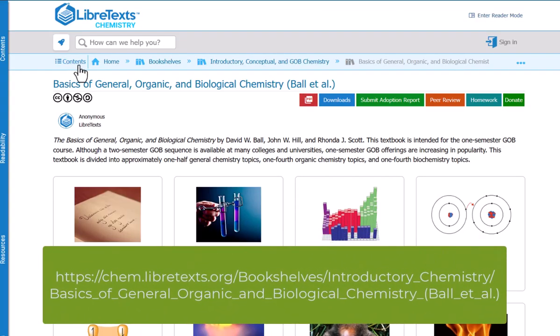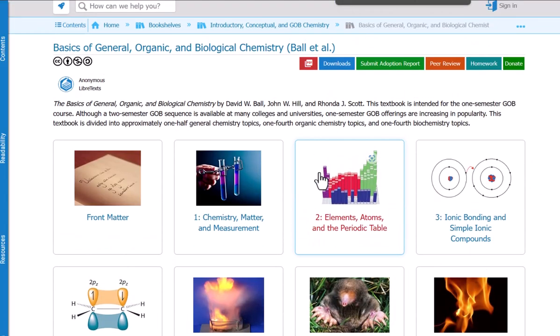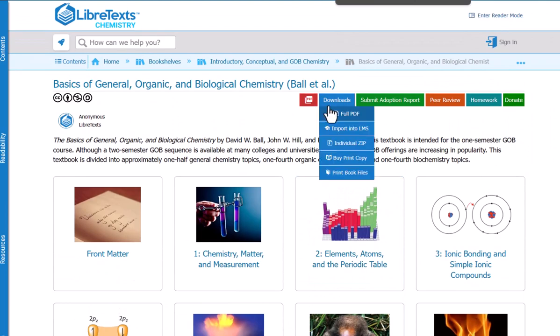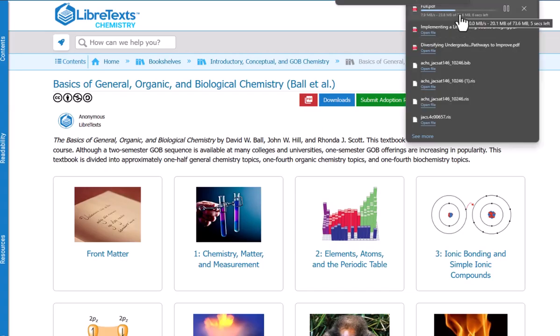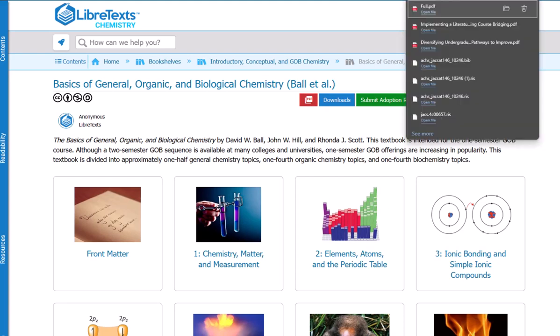This OER textbook also contains the information that you need, and I'm going to search for scientific notation in this case, but it doesn't have that information in the table of contents. As much as I look for it here, I can't find it, so what I recommend to do if you ever get in this situation is to download the full PDF of the book, and it will download to your computer, so you might have to look in your downloads folder.